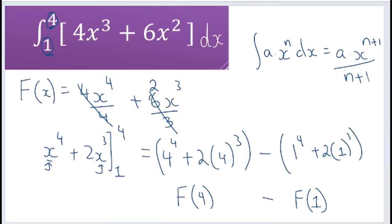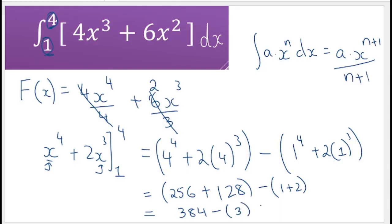So let's simplify that now. So 4 to the power of 4 is going to be 256 plus 2 times 4 to the power of 3 is going to be 128 minus 1 to the power of 4 is 1 plus 2. So that's going to be 256 plus 128, 384, and then we're minusing 3 from that. So that's going to be 381.